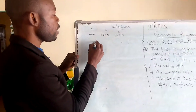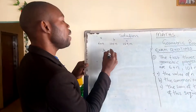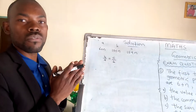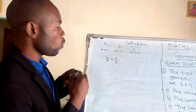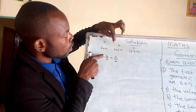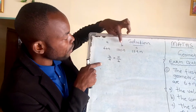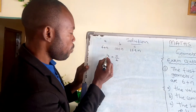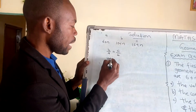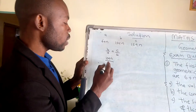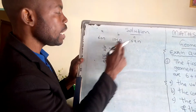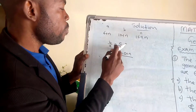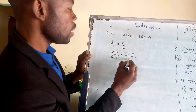We are going to use the geometric mean method. We are given B over A is equal to C over B as our method to find the value of n. So we are just going to replace: where there is B, we put 10 plus n; over A, we put 6 plus n; equals C, which is 15 plus n; over B, which is 10 plus n.